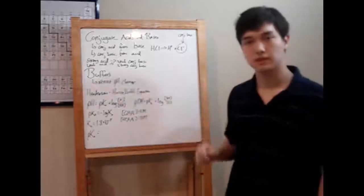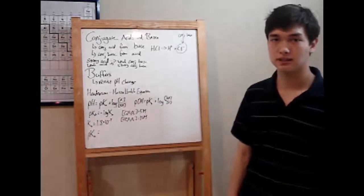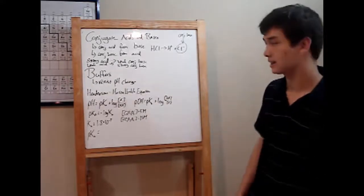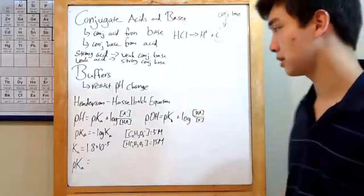Next, buffers. Buffers are solutions designed specially to resist pH change, but they still have their own pH, which you'll need to calculate. You do this through the Henderson-Hasselbalch equation.